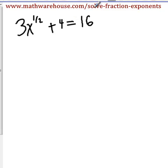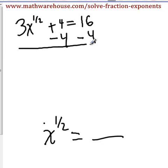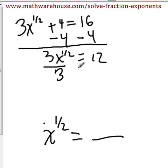So now let's make things a little more complicated. 3x to the 1 half plus 4 equals 16. We want to get this equation to look like the ones we did in the past, where we have some variable x in this case, to some fractional exponent equals some number. So let's rearrange this equation a little to make it look like that. Subtract 4 from both sides will give us 3x to the 1 half equals 12. And we can divide both sides by 3.